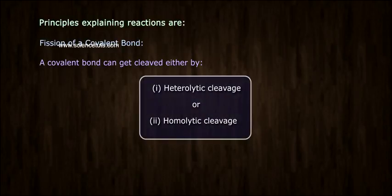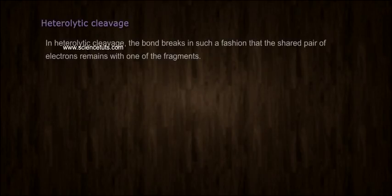Principles explained reactions are fission of a covalent bond. A covalent bond can get cleaved either by 1. Heterolytic cleavage or 2. Homolytic cleavage. In heterolytic cleavage, the bond breaks in such a fashion that the shared pair of electrons remain with one of the fragments.